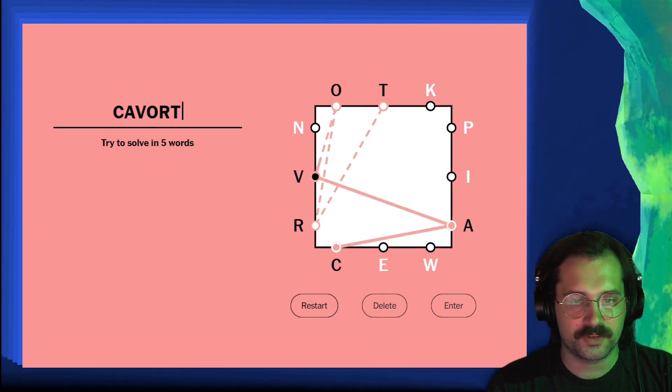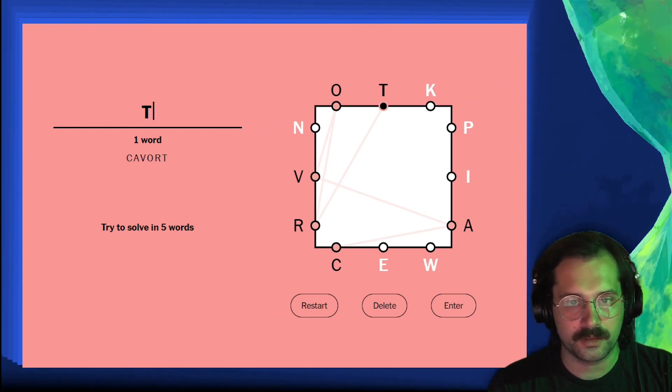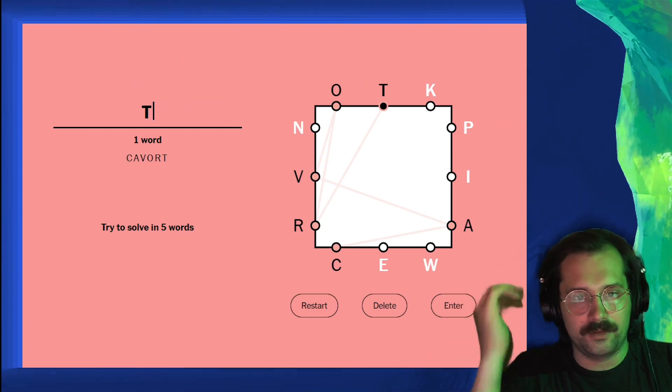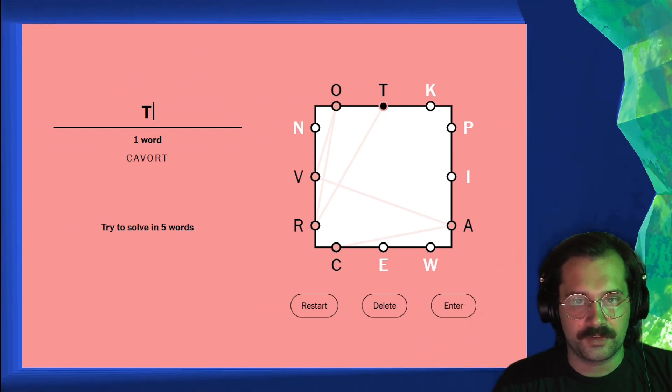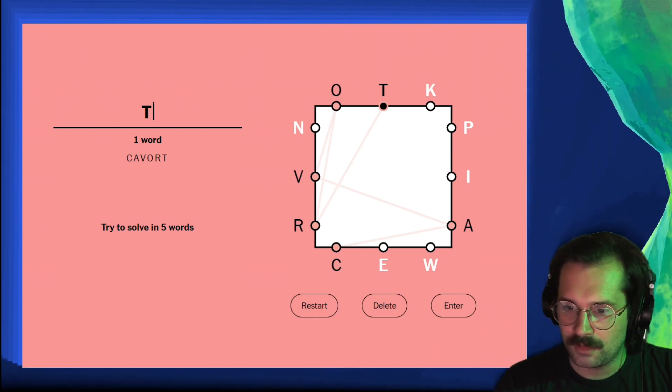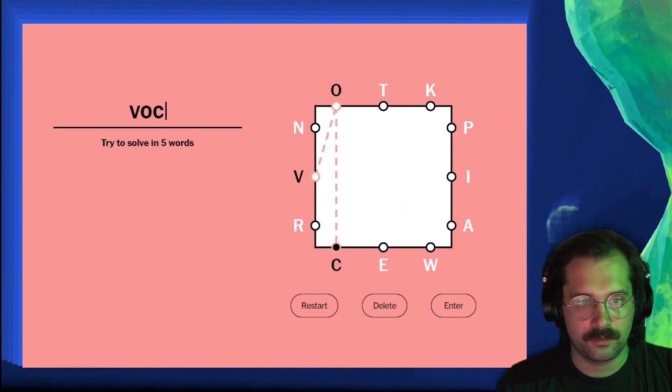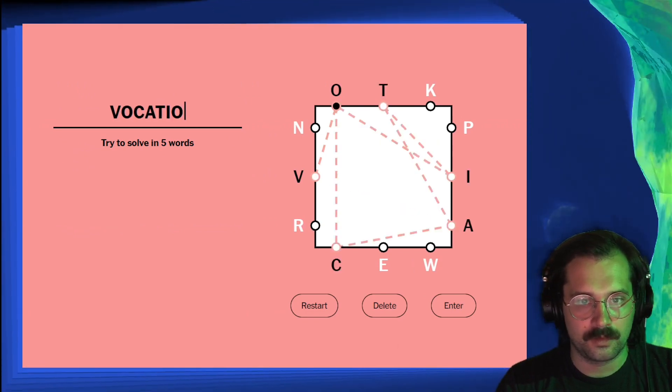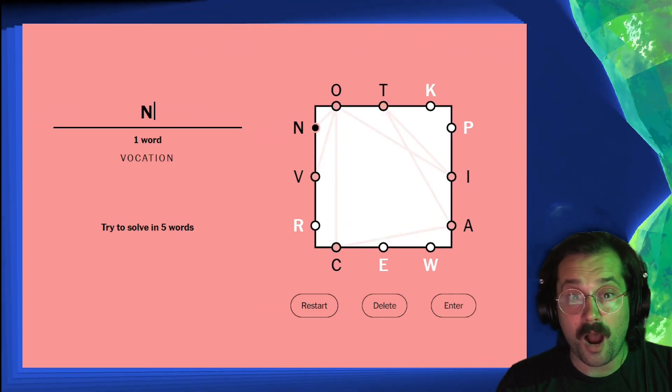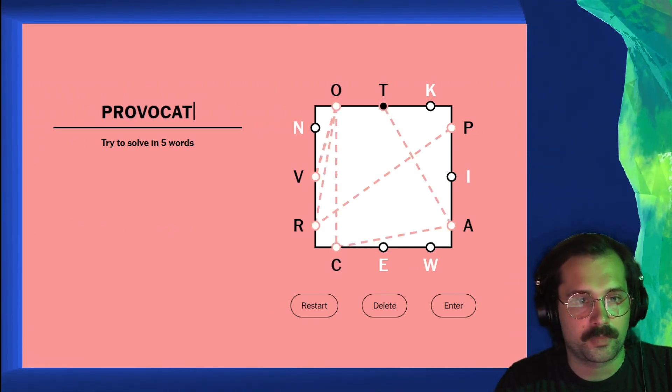Cavort's a word but cavorter apparently is not a word. Cavort's a good word. We're kind of on troubled grounds here because K and P and W are all tough letters. Vocation, there's no way. Wow okay, vocation is huge. Provocation! This is the power of teamwork, provocation.